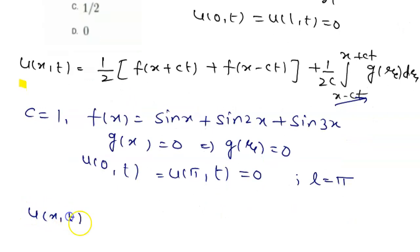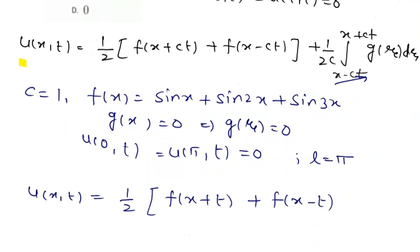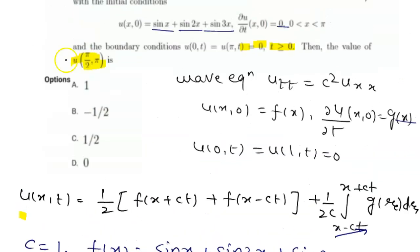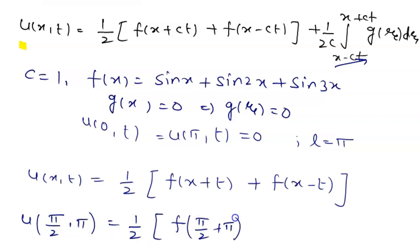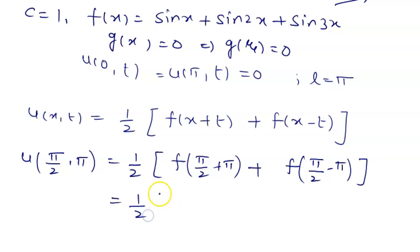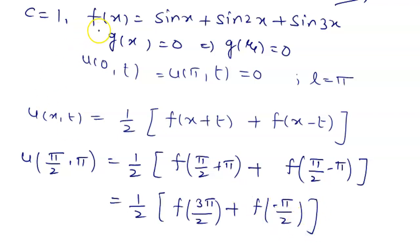We substitute x = π/2 and t = π into the formula. So u(π/2, π) = (1/2)[f(π/2 + π) + f(π/2 − π)] = (1/2)[f(3π/2) + f(−π/2)]. Now substituting into f(x) = sin x + sin 2x + sin 3x: f(3π/2) = sin(3π/2) + sin(3π) + sin(9π/2).